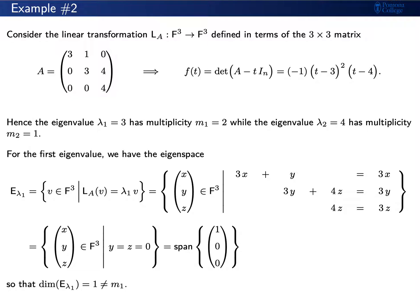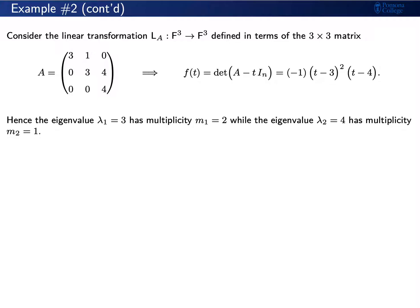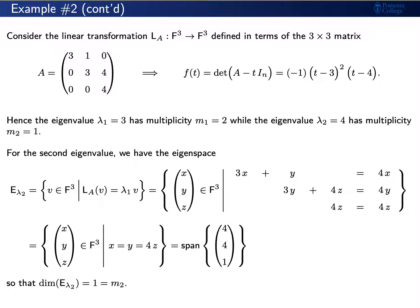For the eigenspace of lambda 2 equals 4: setting L sub A of v equal to lambda 2 times v, with lambda 2 times v being (4x, 4y, 4z), we find that z is arbitrary, y must equal 4z, and x must equal 4z. The eigenspace is spanned by (4, 4, 1), with dimension 1, which equals the multiplicity m sub 2 equals 1.